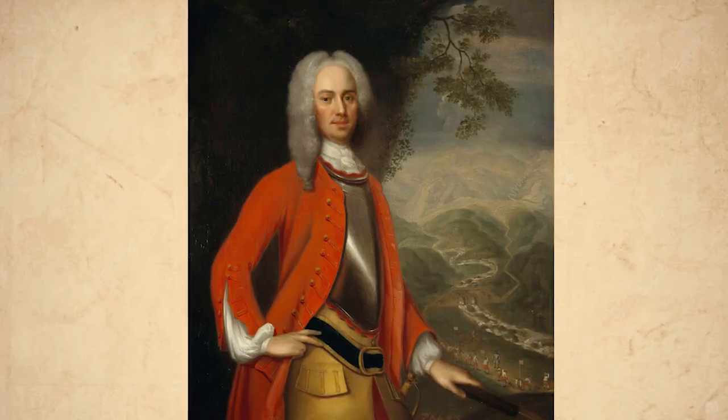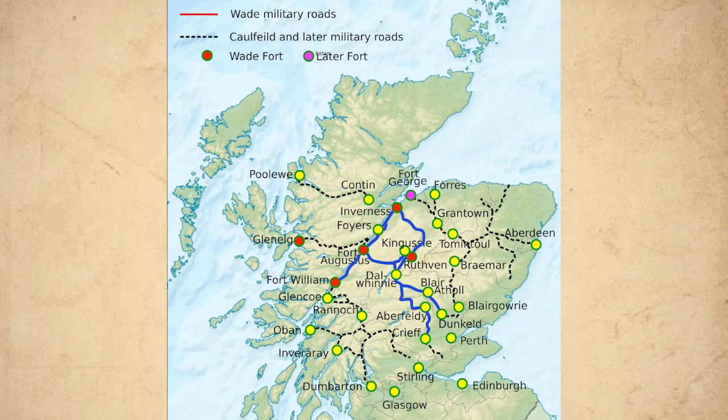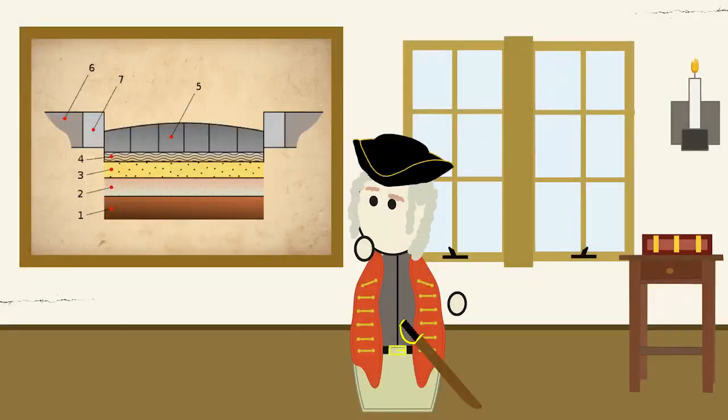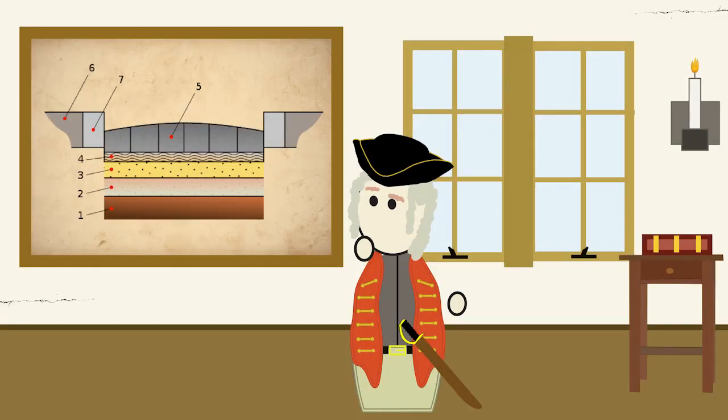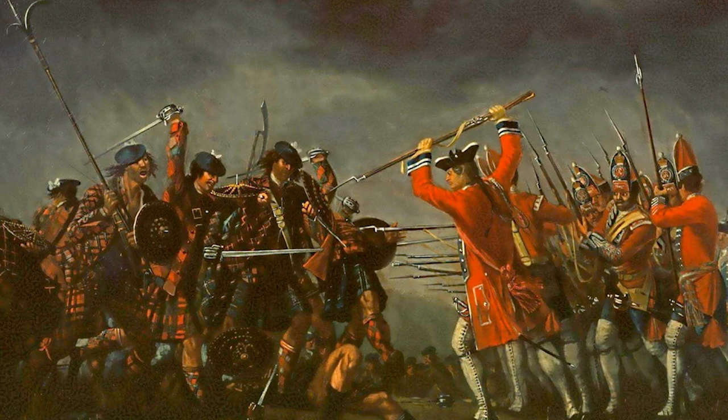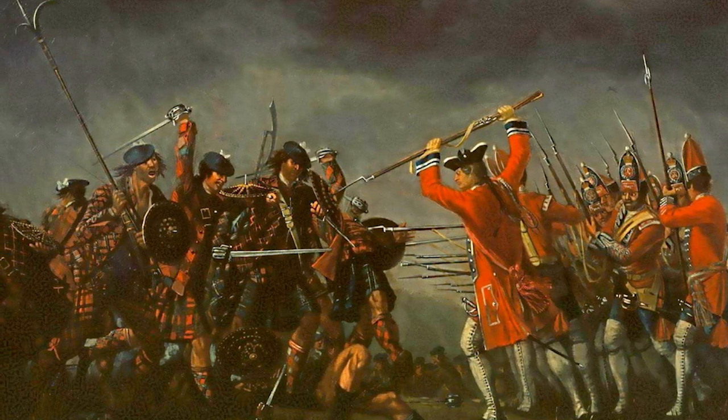British Field Marshal George Wade built 250 miles of road in the Scottish Highlands, known as Wade's Military Roads. Wade used directions from Roman engineering texts. The purpose of the roads were to restore order in the region after the Jacobite Rebellions of 1715.